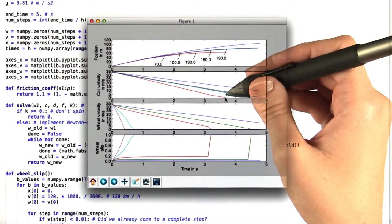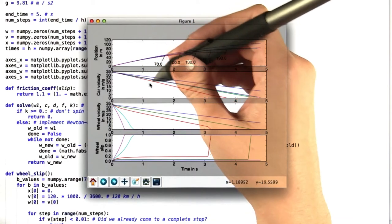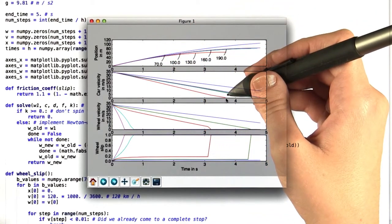Interestingly enough, it's the 130 meters per second braking, which is one of the middle values, that makes the car stop first.